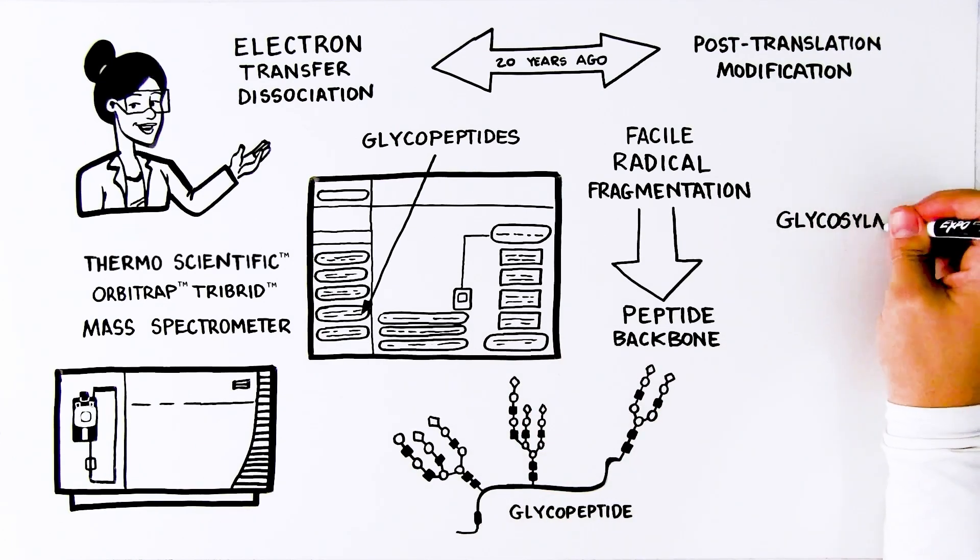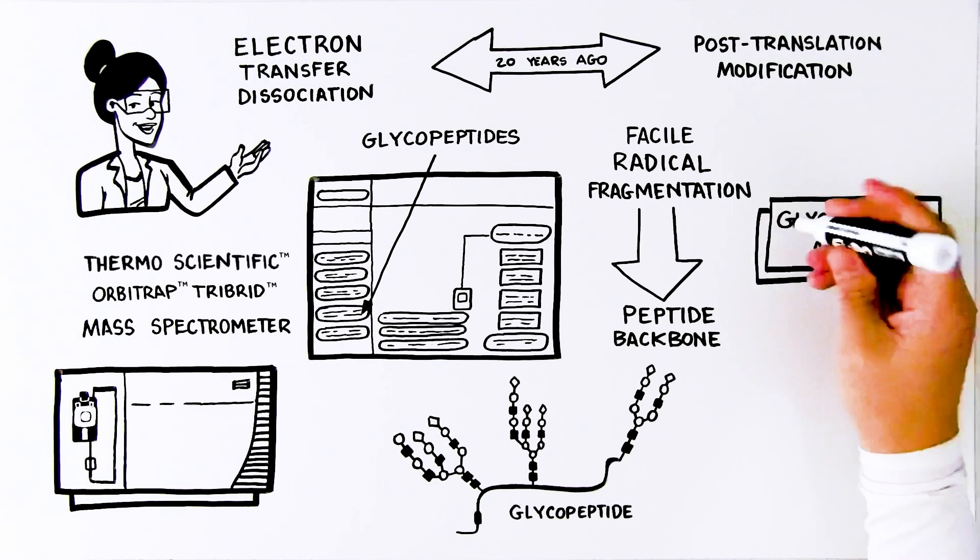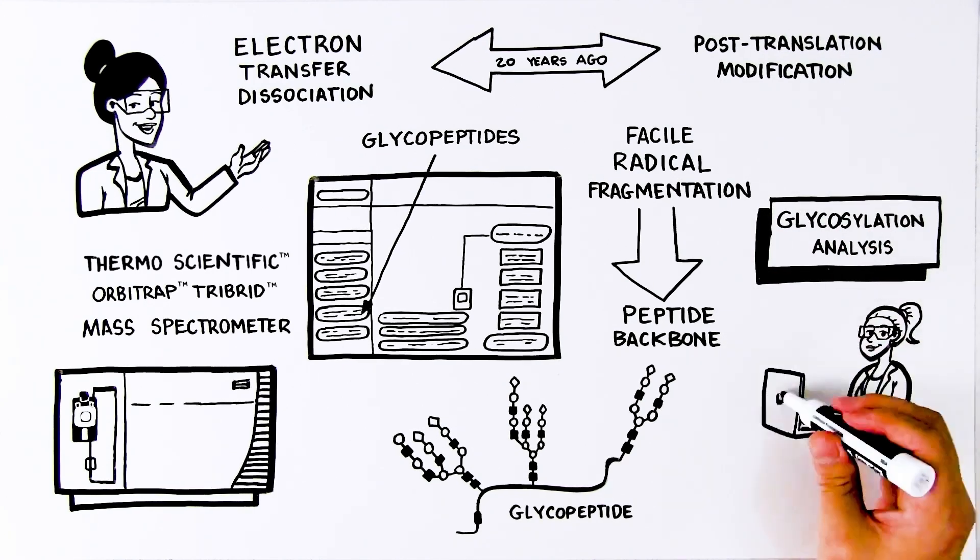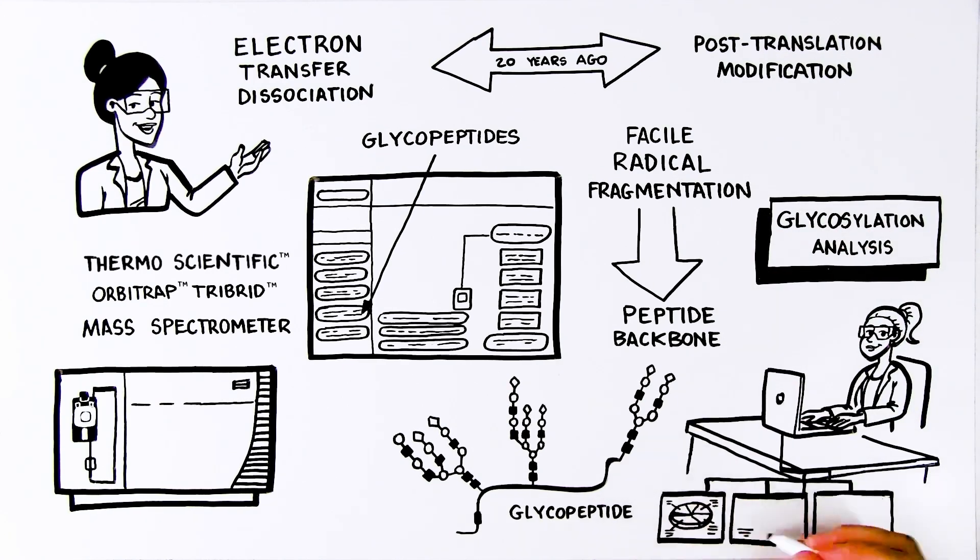Preservation of PTMs is crucial in fields like glycosylation analysis, where researchers need to retain modifications to localize the modified amino acids and fully understand glycoprotein structure and function.